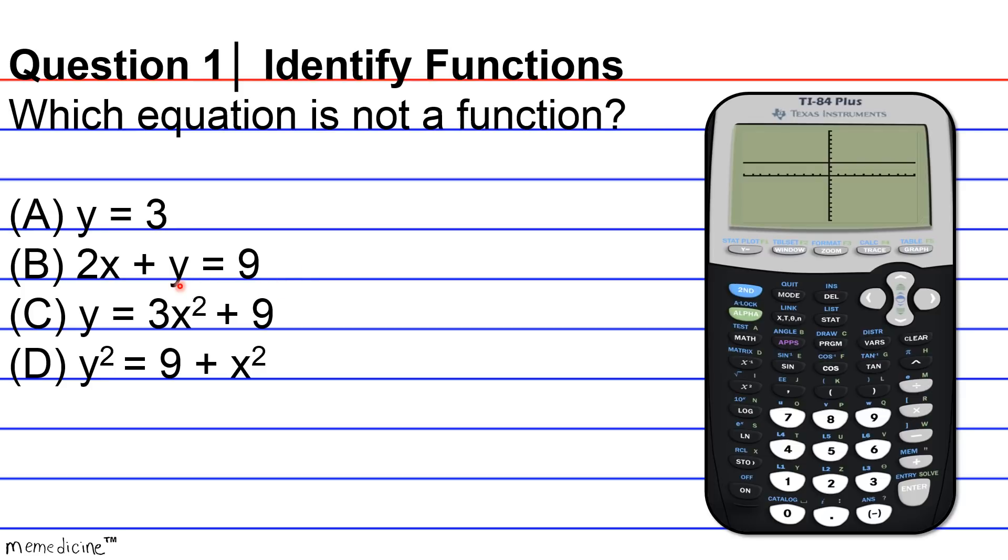Alright, so now we're on to answer choice B, and if you're really astute and familiar with algebra 2, although this is not in the y equals format, you would immediately notice that this is the equation of a line. The y equals mx plus b if you just subtract 2x from both sides, and so this is definitely going to be a slanted line. And it will pass the vertical line test.